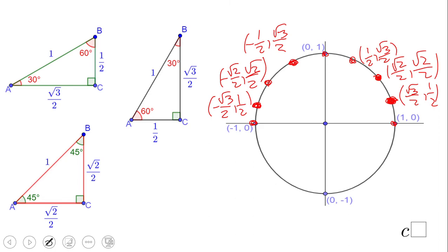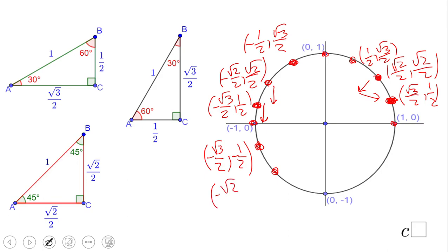Moving into Quadrant 3, each point is a reflection of its Quadrant 1 or 2 counterpart — either over the x-axis or over the origin. The x-coordinate stays negative and the y-coordinate is now also negative. So we get (−√3/2, −1/2), then (−√2/2, −√2/2), and then (−1/2, −√3/2). That completes Quadrant 3.